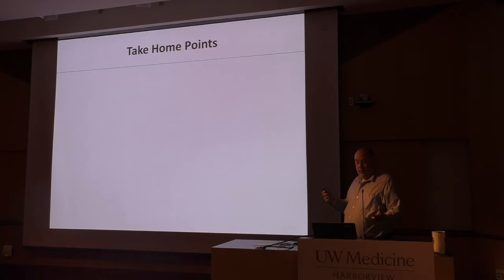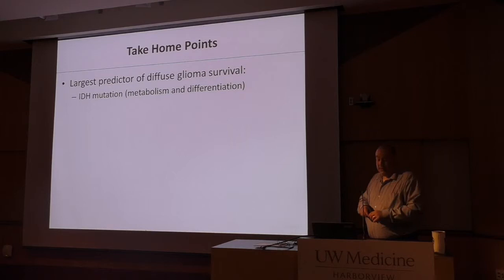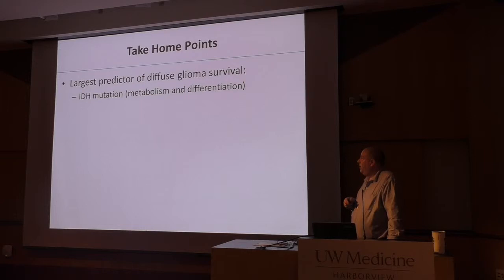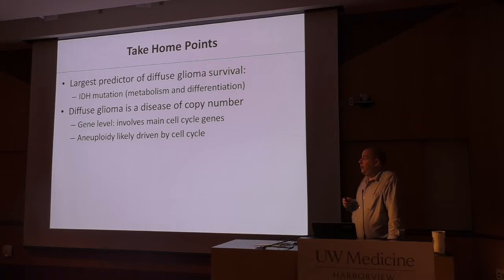As we near the end, take-home points: The largest predictor of diffuse glioma survival is IDH mutational status. IDH itself has many roles in the cell including metabolism, it's thought to inhibit differentiation, and it alters chromosomal architecture and chromatin structure of DNA.